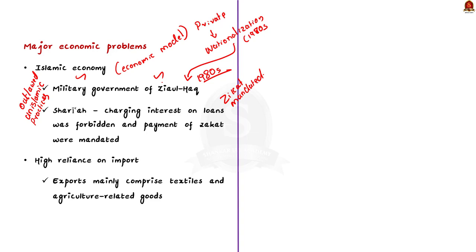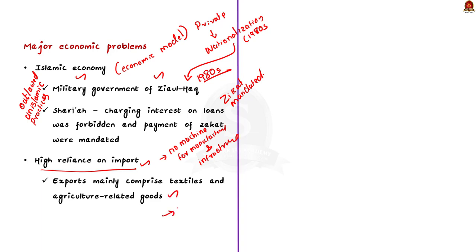Secondly, Pakistan is highly reliant on imports. Pakistan does not produce any machinery crucial for manufacturing and infrastructure development, so they are very heavily reliant on imports. Pakistan exports mainly textiles and agriculture-related goods, so Pakistan's economy basically lacks technological sophistication. The country's imports have seen a significant rise over the years, but exports have remained largely stagnant. This has widened the trade deficit in Pakistan.